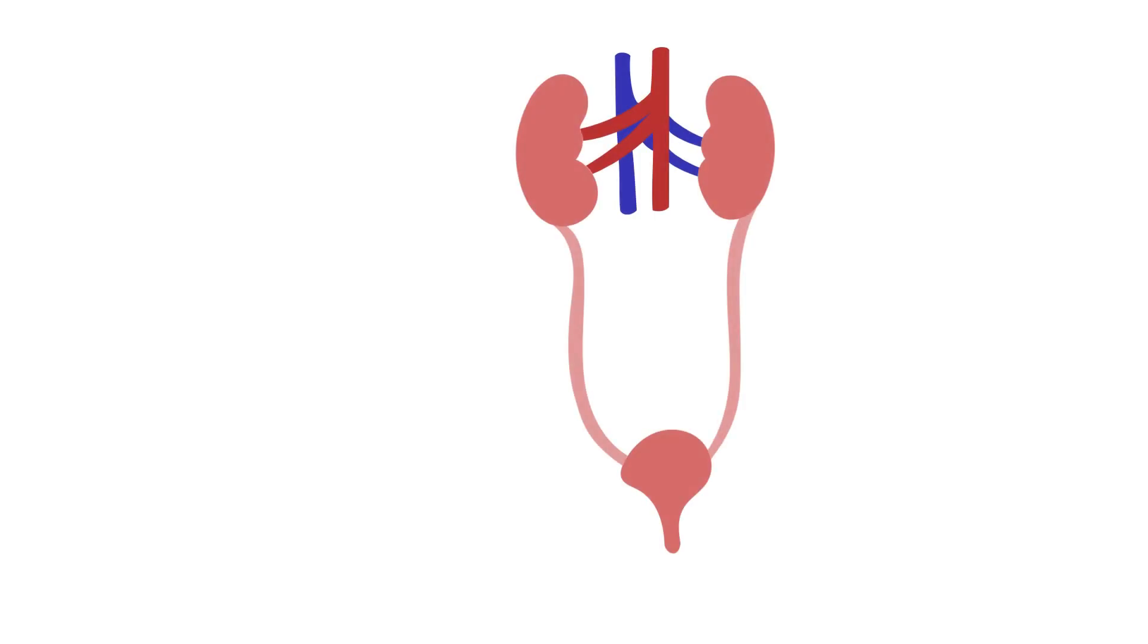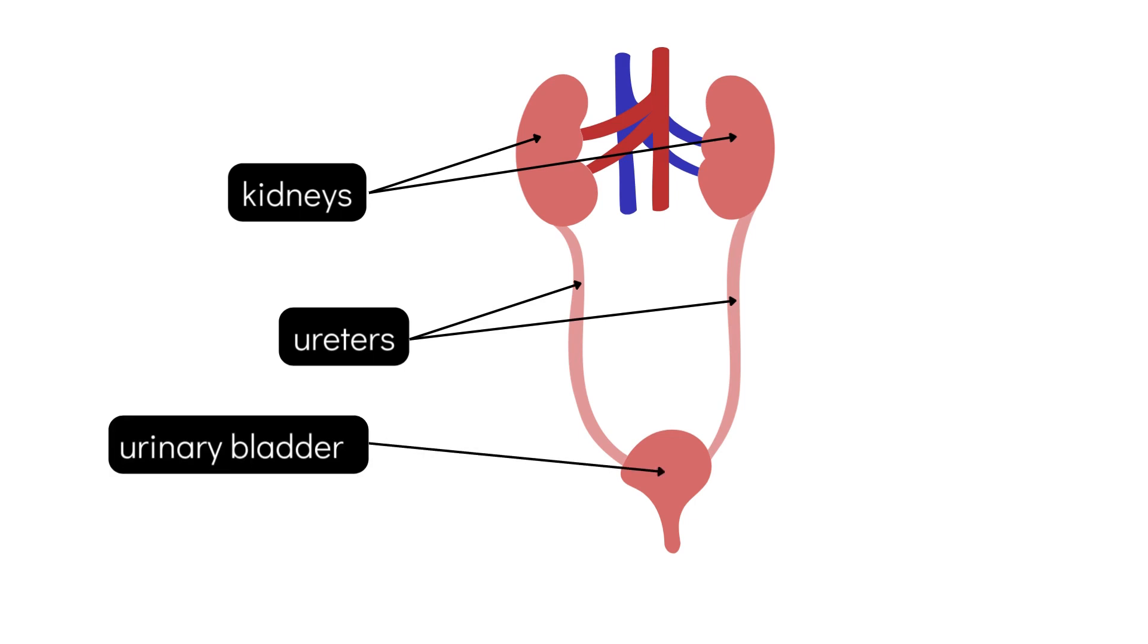The excretory system is made up of a pair of kidneys, a pair of ureters, a urinary bladder, and a urethra. Let us now understand the function of each organ of the excretory system.